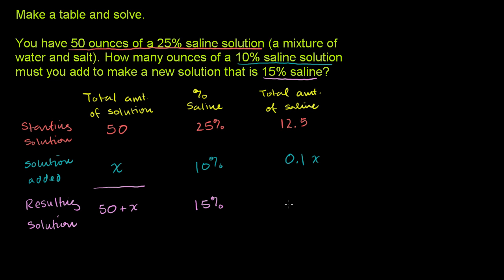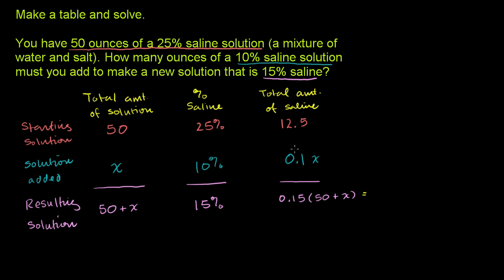What's the total amount of saline in it? This is the key cell in the table. There are two ways to get the total amount of saline. One, we could multiply the percent saline times the total volume: 0.15 times (50 plus x). The other way is to add the saline from both solutions: the 50-ounce solution had 12.5 ounces of saline, and we added 0.1x ounces of saline. So this has to equal 12.5 plus 0.1x.